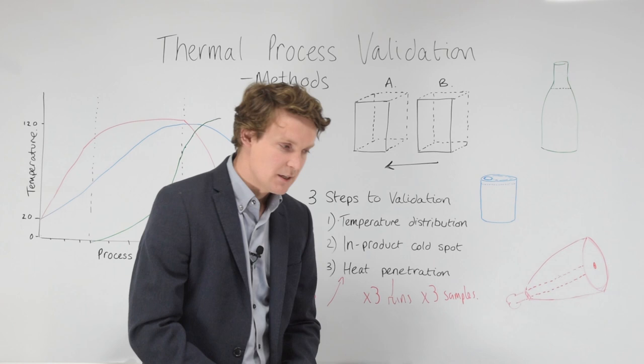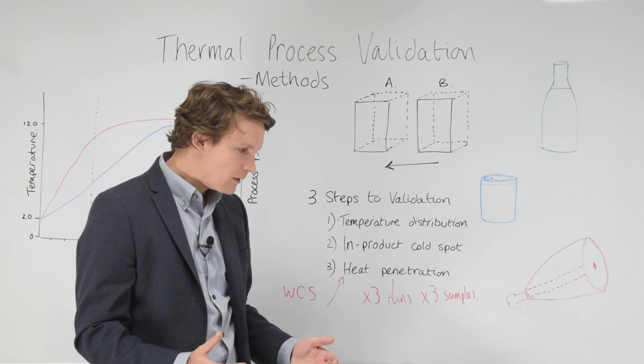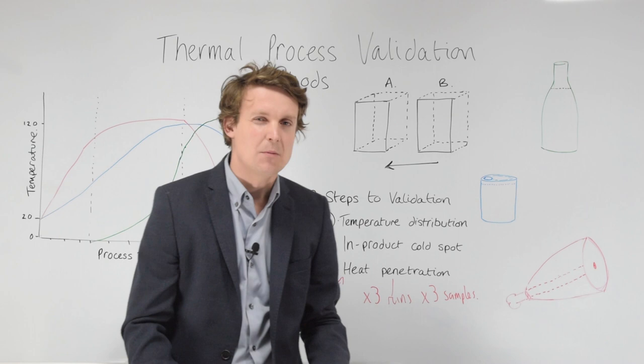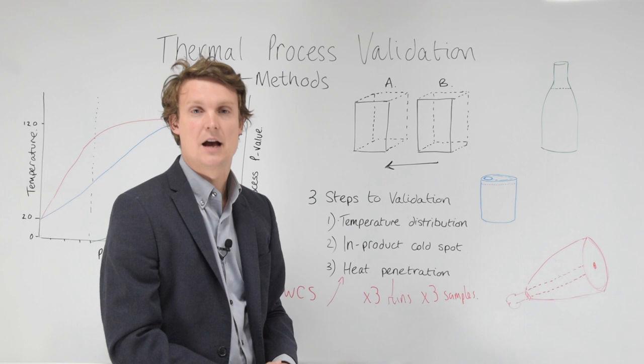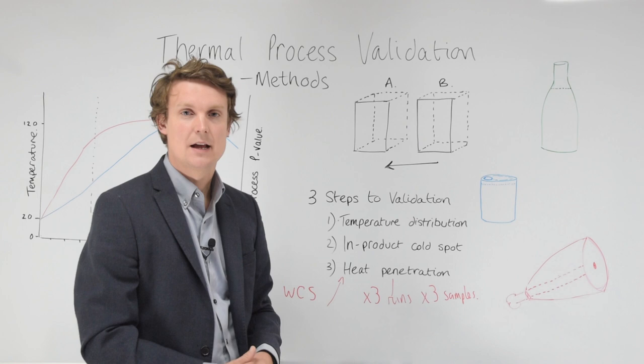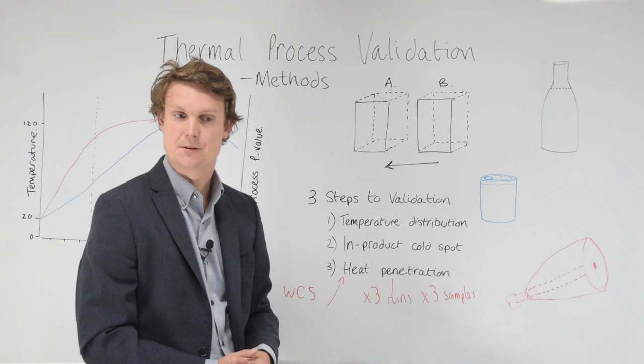So how do we undertake a thermal process validation study? There's many ways of doing it. We could use microbiological methods or even enzymes, but one of the most straightforward and commonly used methods is by actually just measuring the temperature of the products going through the thermal process and using that temperature data to understand if a minimum target has been hit to reduce or eliminate that specific level of microorganisms in the food.